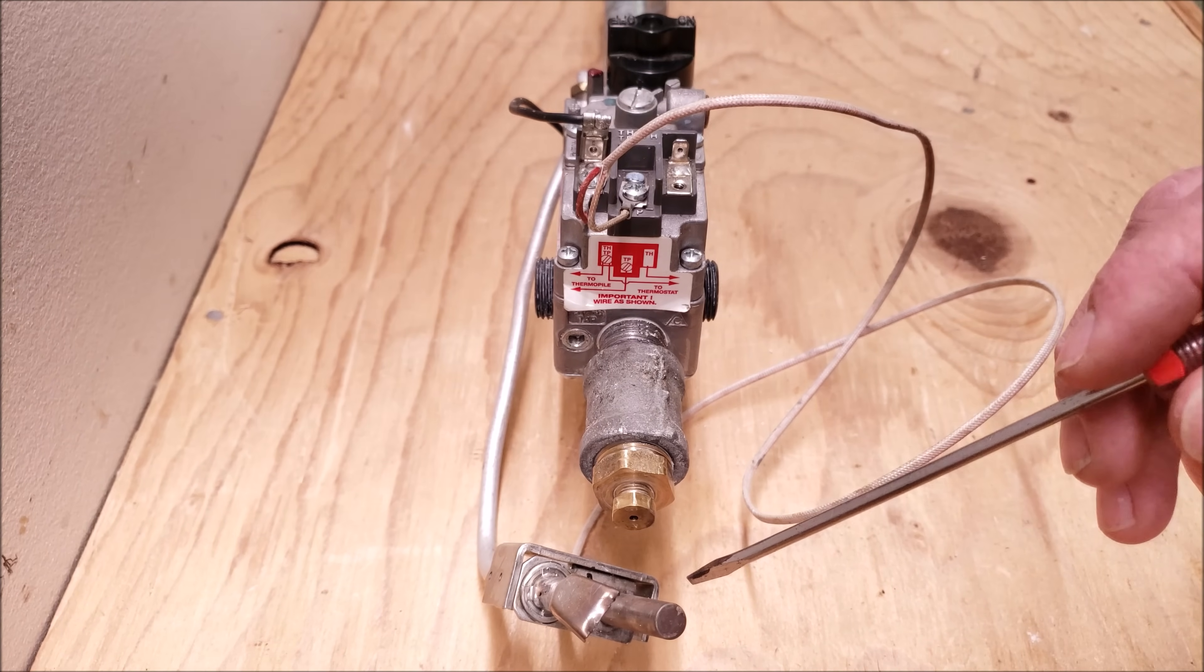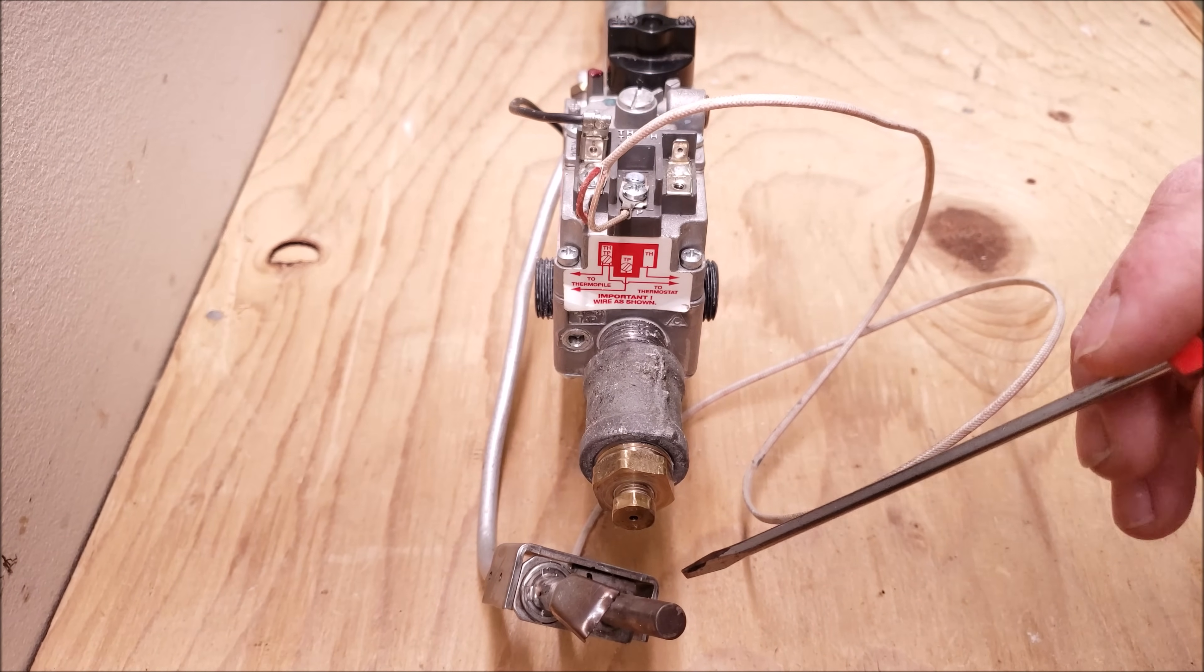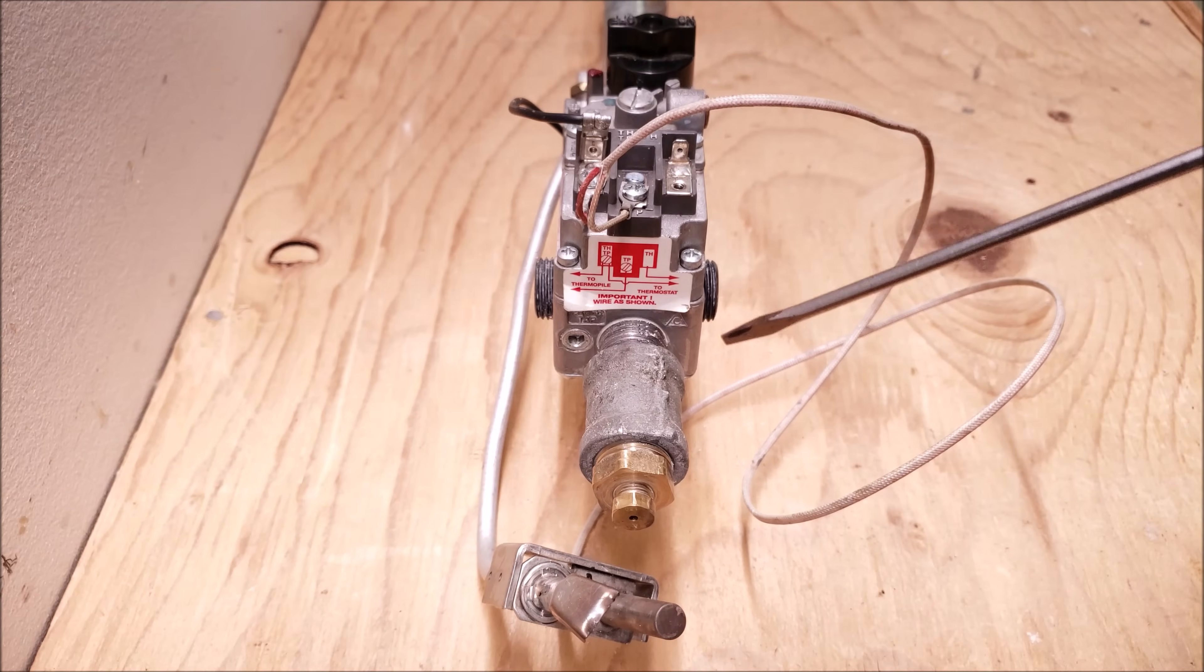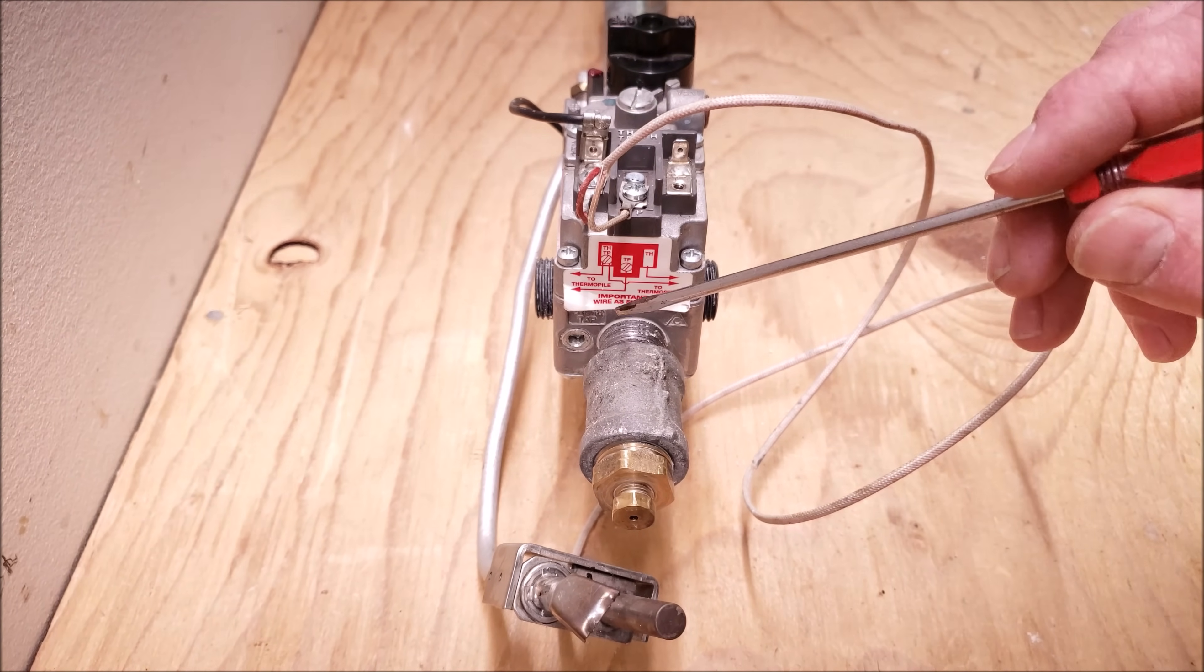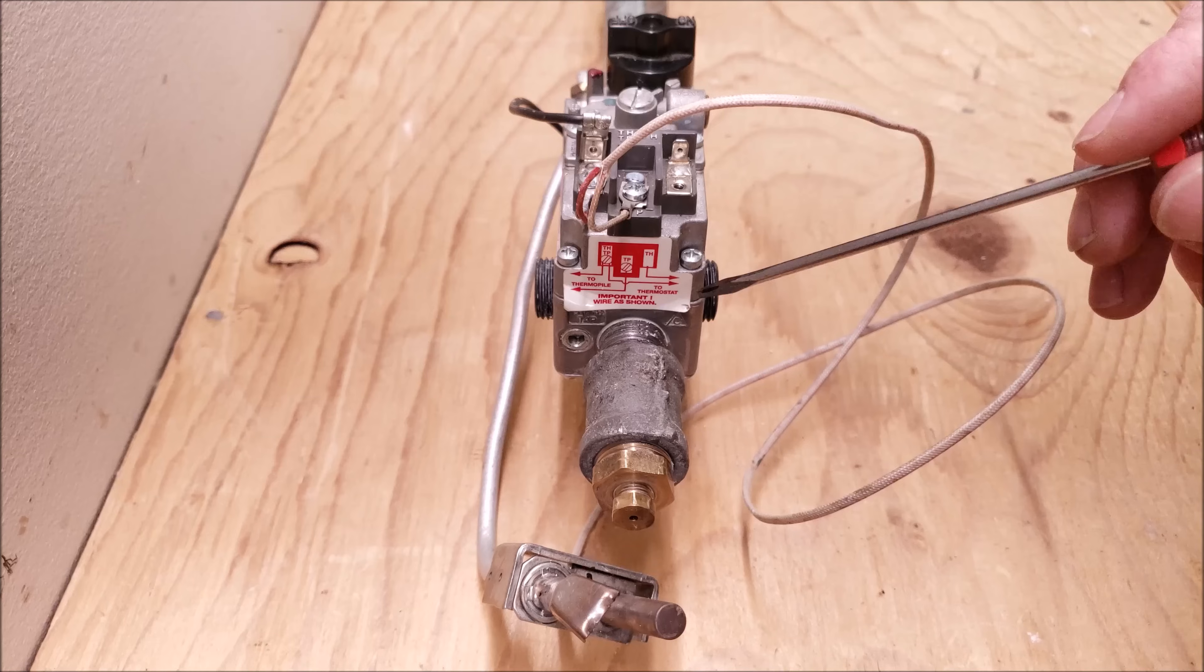So this is a 750 millivolt thermopile or otherwise known as a power pile and we're wiring that into a gas valve that has a pilot solenoid valve as well as a main burner solenoid valve.